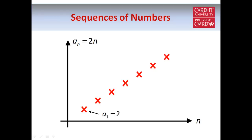Here's the first term, a_1 equals 2, here's the second term, a_2 equals 4, and so on. Now we're going to look at some properties of sequences, starting with bounded sequences.